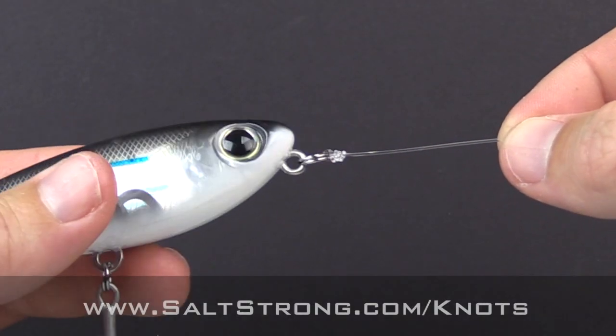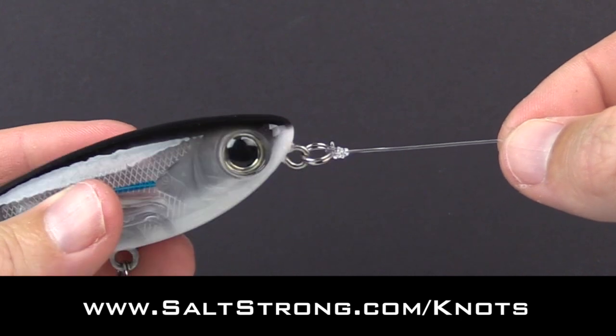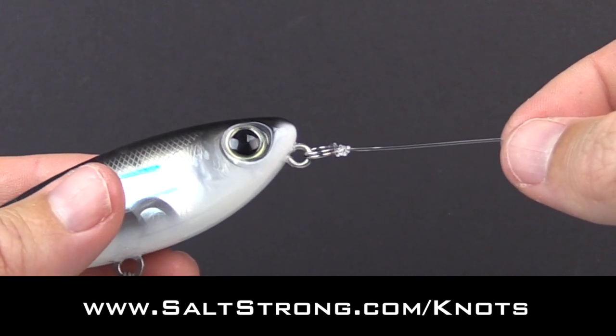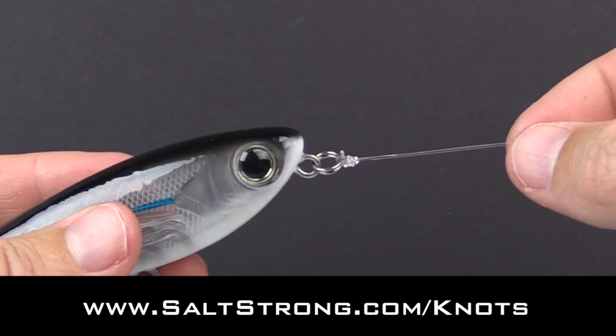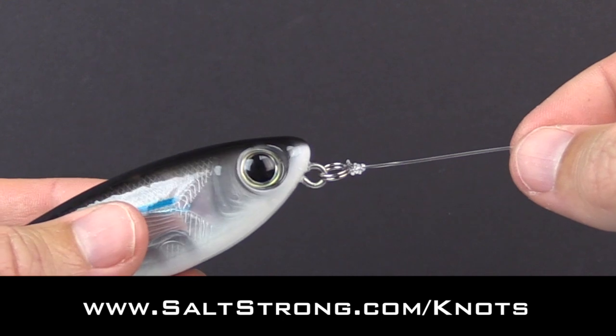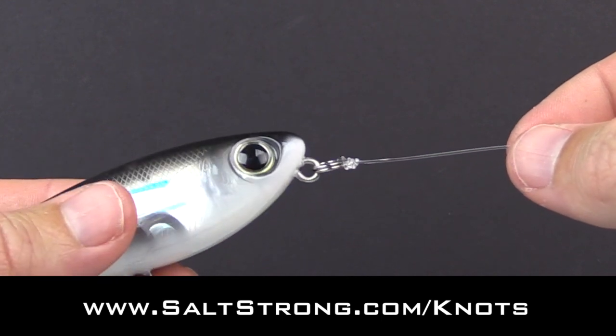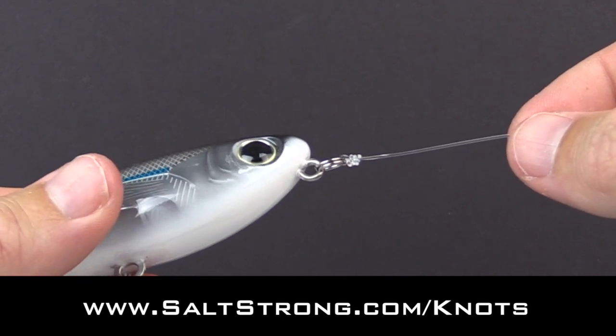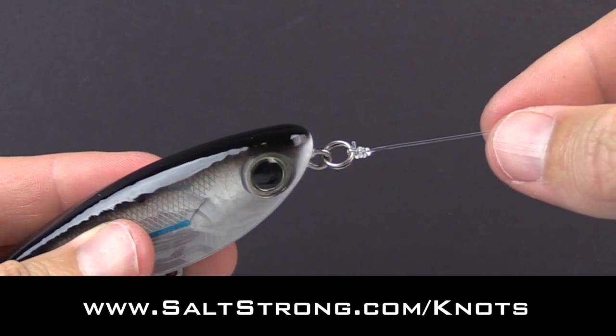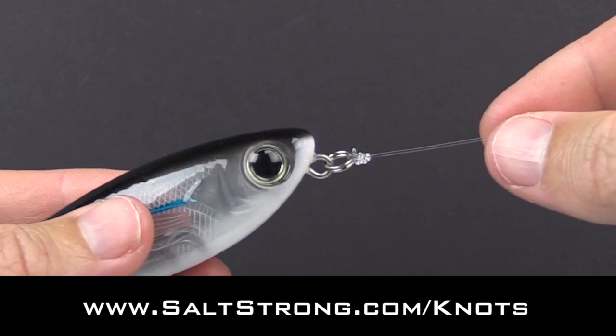So I have done some testing, we're really on the ultimate quest to find the best knots for every single connection and every line type. This knot did score pretty good for traditional monofilament and fluorocarbon, it did not do well for braid. And to see the latest and greatest results on these knot test experiments be sure to go to our website saltstrong.com/knots.